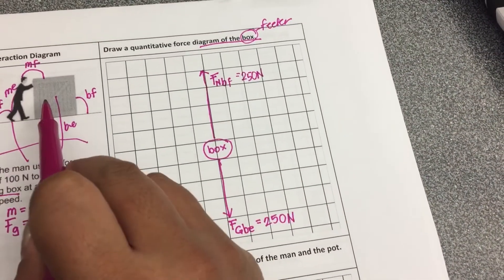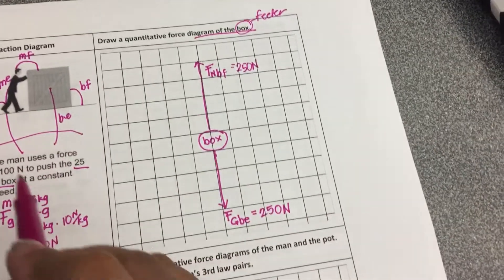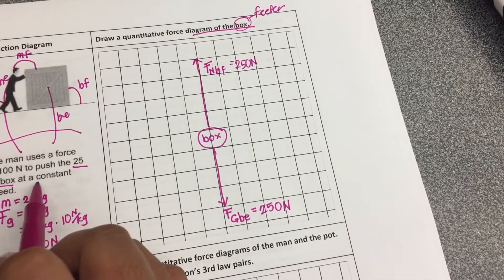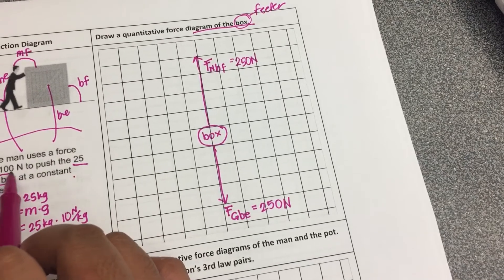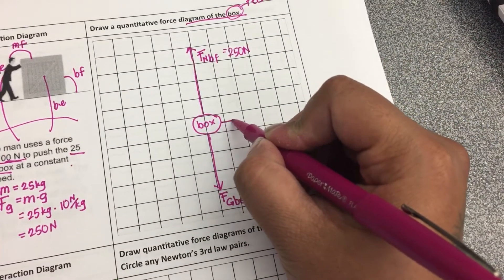we're going to address the side-to-side movement. So the man is pushing the box at a constant speed, and he's pushing the box at 100 newtons. So the box is being pushed to the right.